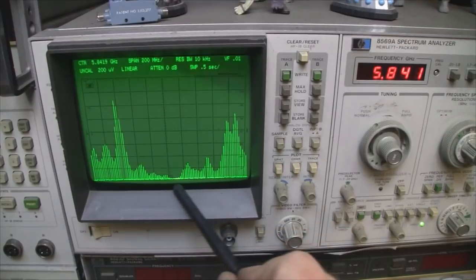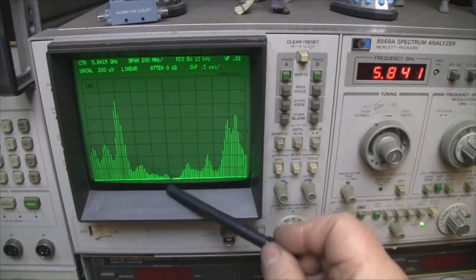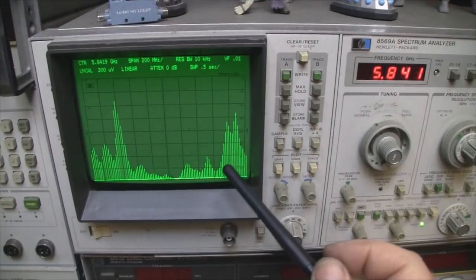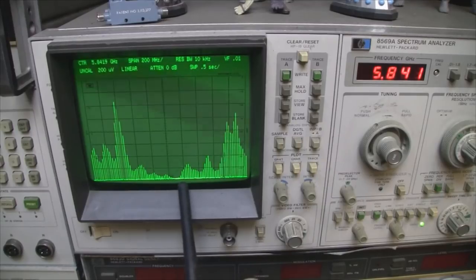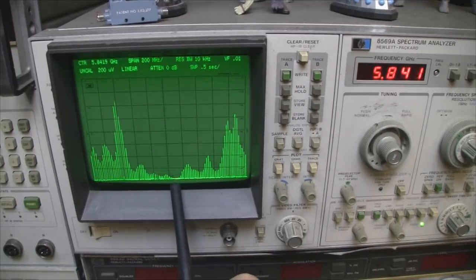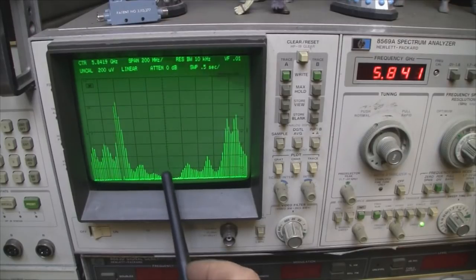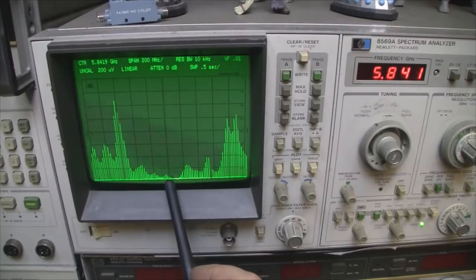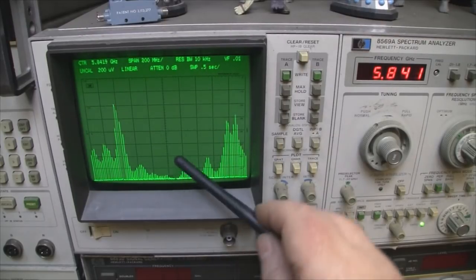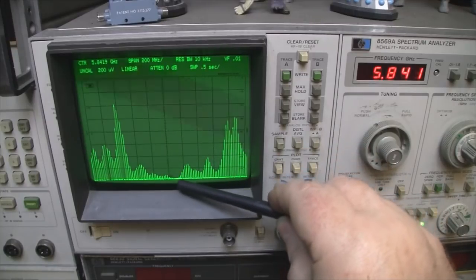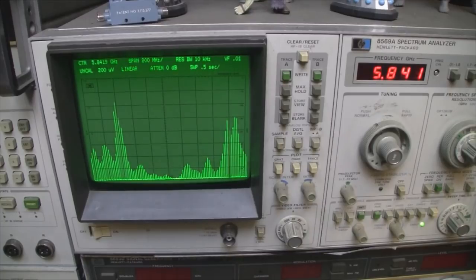So here on the spectrum analyzer, a really nice frequency response. I've got it centered on 5.84 GHz and you can see the return loss there is really really low, so that's a good indication that it's got a very good VSWR. It's working well just in that sweet spot of 5.84 GHz to probably 5.860 GHz, so quite narrow but a really nice frequency response.